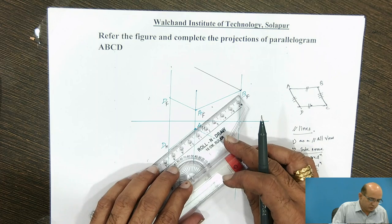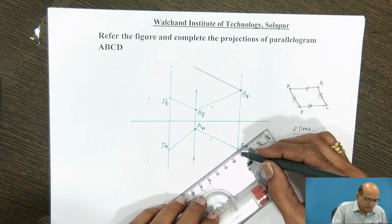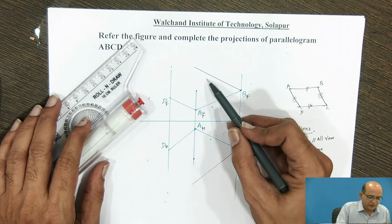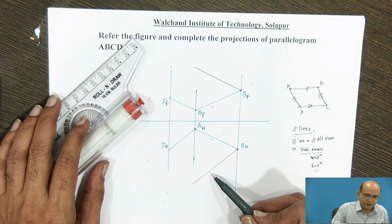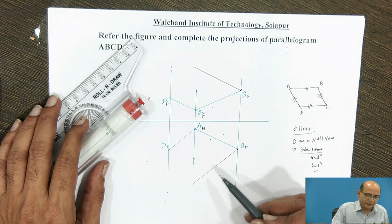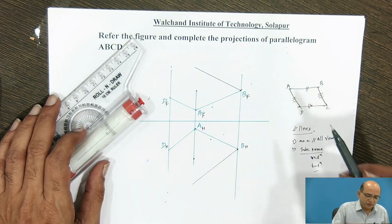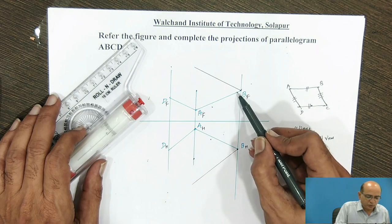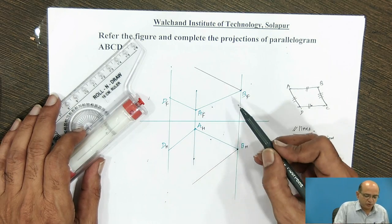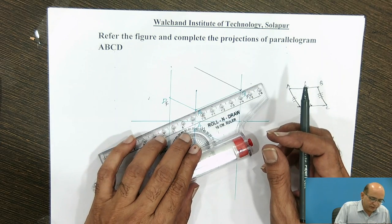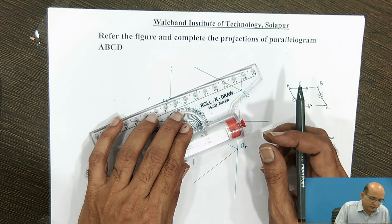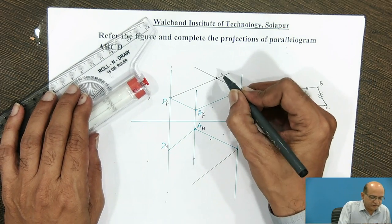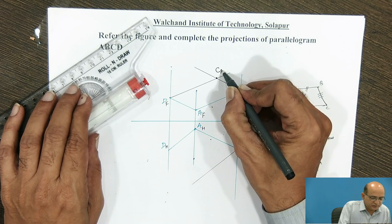Similarly, we have to draw a line parallel to AD from BH in the top view. On these two lines we will obtain the third corner: in the front view we obtain it somewhere here, and in the top view somewhere here. For obtaining the third corner CF, we use the concept of parallel lines again — AB will have the parallelism of DC. So we complete the line starting from corner D as a line parallel to AB, and the intersection gives us the CF corner.